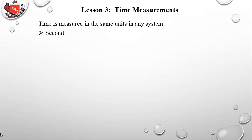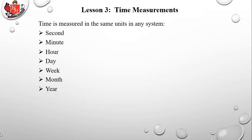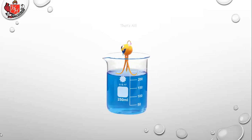Time is measured the same way in any system — metric or English. Units include seconds, minutes, hours, days, weeks, months, years, and centuries. In this class we'll use almost exclusively seconds and minutes, as we're dealing with relatively short time intervals. That covers Lesson 6 on measurements — you'll have exercises and then actual lab measurement practice this week.